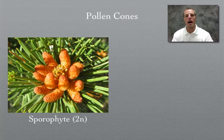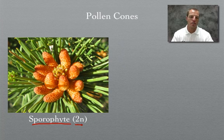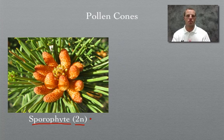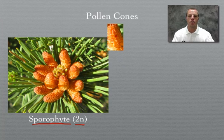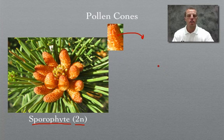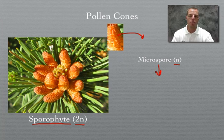Let's look at pollen cones. These pollen cones are labeled as a sporophyte, also noted as 2N. If you remember from our studies on cells, this is a diploid cell, meaning it has two sets of chromosomes. These sporophytes are diploid, and this sporophyte will actually go through what we call meiosis. Meiosis produces sex cells that are haploid, so it's going to produce what we call a microspore, which is haploid. That microspore is going to become our male gametophyte.